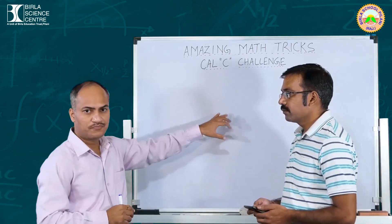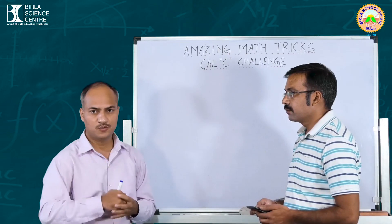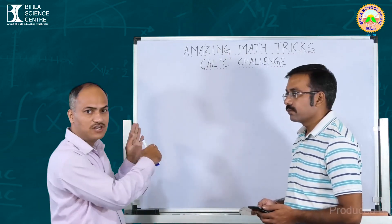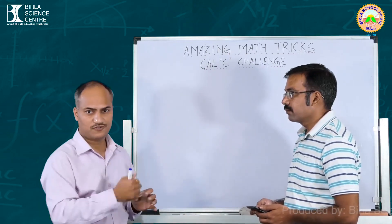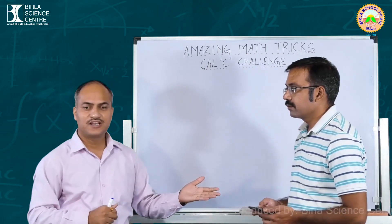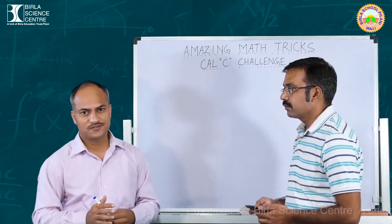I will write two numbers on the board and the third number I will ask from you. Product of these all three numbers will be done by both of us. He is ready with the calculator to do the computation, so let us see what happens.